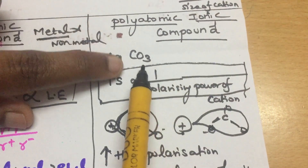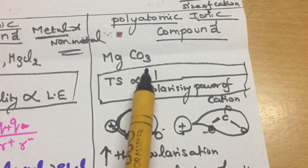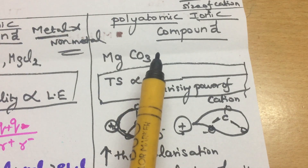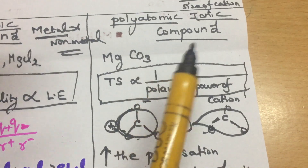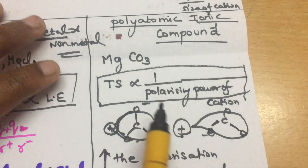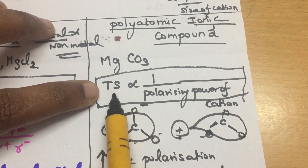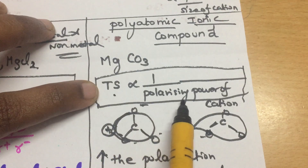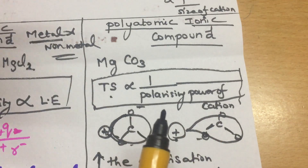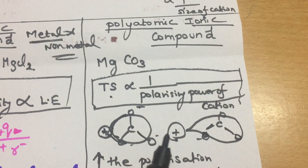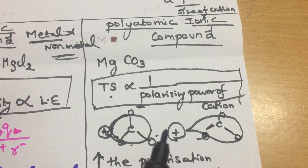Polyatomic compounds include carbonate, nitrate, hydroxide, and sulfate. Thermal stability is inversely proportional to the polarizing power of the cation. As polarizing capacity increases, the bond is easier to break, so thermal stability is very low.